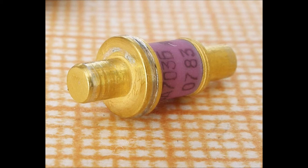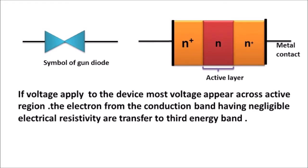Gunn diode. A Gunn diode, also known as a Transferred Electron Device (TED), is a form of diode, a two-terminal passive semiconductor electronic component with negative resistance used in high-frequency electronics. It is based on the Gunn effect discovered in 1962 by physicist J.B. Gunn.